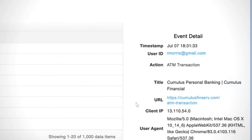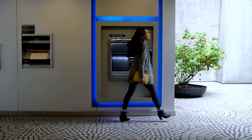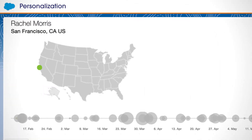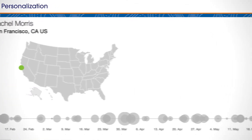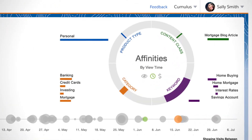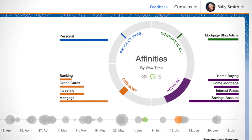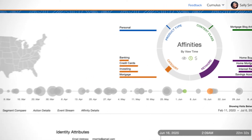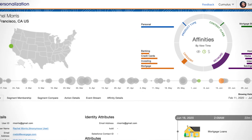Marketing Cloud Personalization interprets the customer's engagement patterns to understand their true affinities and intent, storing all that information in an actionable, unified profile.